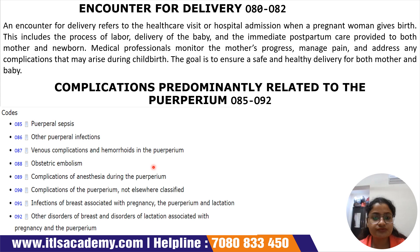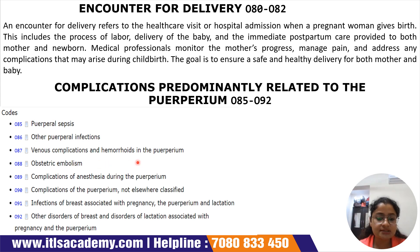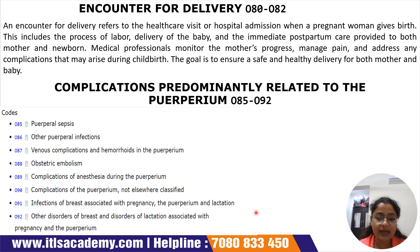Subcodes O85 to O92 refer to complications predominantly related to the puerperium — the period just after delivery. O85 corresponds to puerperal sepsis. O86 corresponds to other puerperal infections. O87 corresponds to venous complications and hemorrhoids in the puerperium. O88 corresponds to obstetric embolism. O89 corresponds to complications of anesthesia during the puerperium. O90 corresponds to complications of the puerperium not elsewhere classified. O91 corresponds to infections of breast associated with pregnancy, puerperium, and lactation. O92 corresponds to other disorders of breast and disorders of lactation associated with pregnancy and the puerperium.